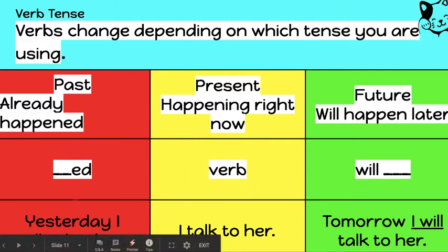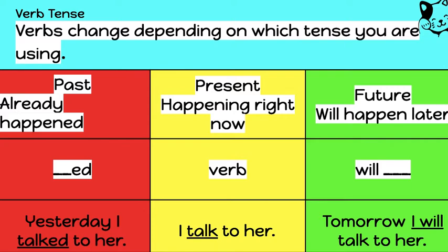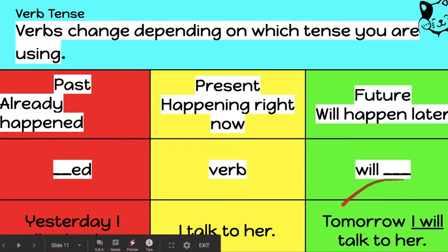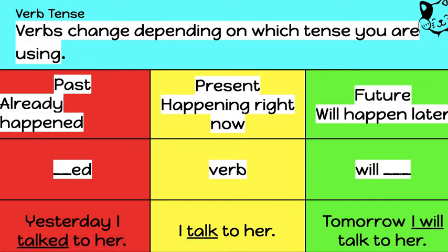For example, with the word talk: yesterday, I talked to her — I added -ed to the end. I don't say 'yesterday I talk to her,' that sounds weird. We have to say 'yesterday I talked to her.' For the present tense, I would say 'I talk to her,' or 'I am talking to her' — that also is present tense. And for the future, you add the word will in front: 'tomorrow I will talk to her.' I don't think this is difficult for you because you all do a great job when speaking — it's just a matter of noticing it and making sure you add -ed for past or the word will for future when writing.